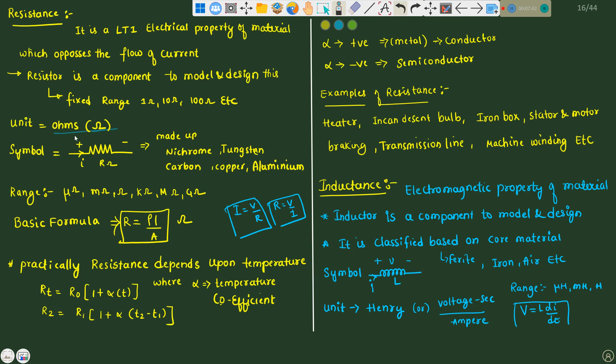Unit of resistance is ohms. Symbol is like this, and it is made up of nichrome, tungsten, carbon, copper, aluminum. Range lies from micro-ohm, milli-ohm, ohms, kilo-ohm, mega-ohms, giga-ohms, and basic formula for it is R equals to rho L by A. This is specific resistivity. L is length of the conductor, A is cross-sectional area of the conductor. Practical resistance depends upon the temperature.